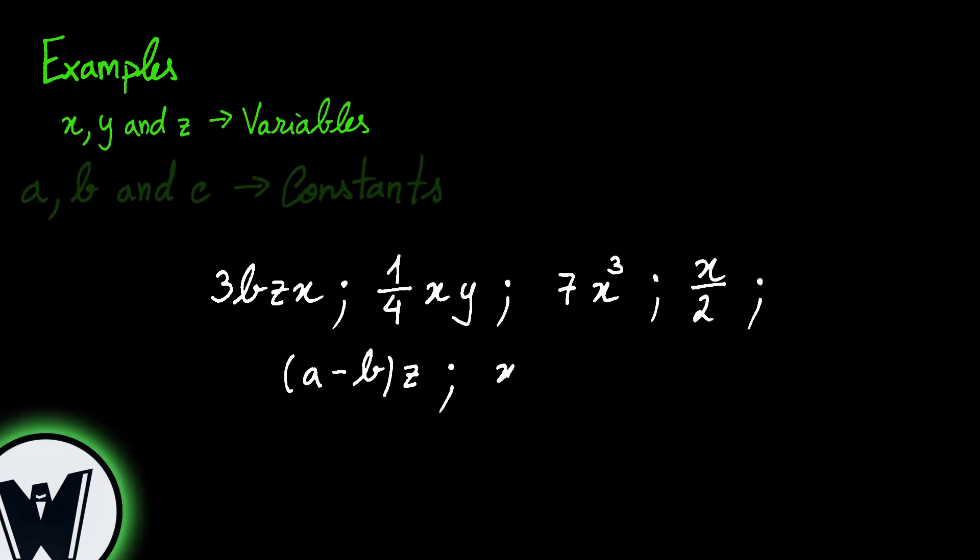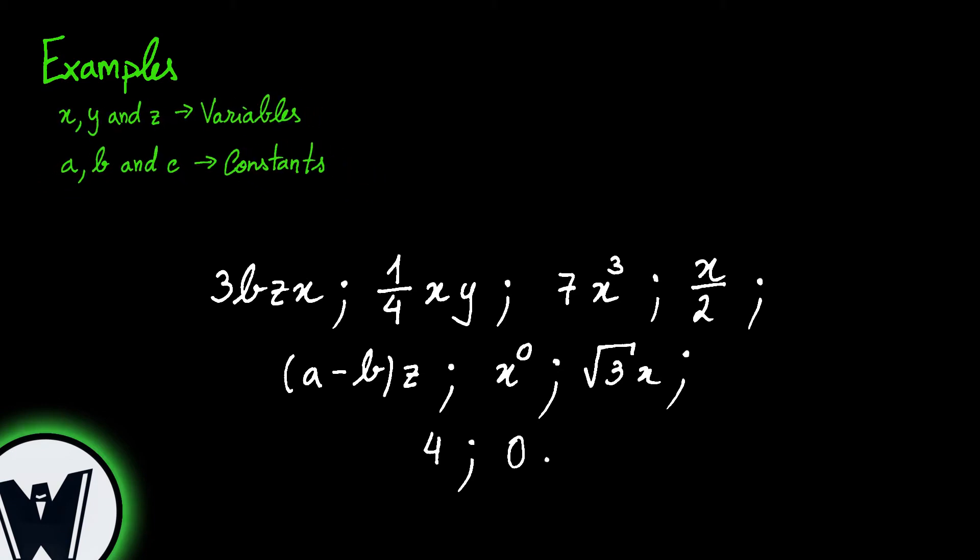Now, as examples of monomials we may have the following, considering that x, y and z are variables and a, b and c constants. In the first example we clearly see the product connections between constants and variables. The second one shows a fractional number that is a constant multiplied by two variables. The next example shows a product which has a power with a natural exponent, being all these three perfect examples of monomials.